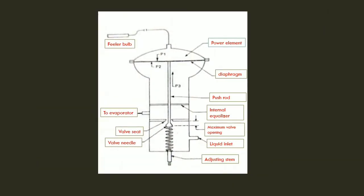This is the figure of the thermostatic expansion valve. We have two parts to keep in mind. The level of the valve is on its refrigerant outlet. The valve is on its seat, valve needle, power elements, diaphragm, push rod, internal equalizer, and maximum valve operating space. The liquid inlet. This is a liquid line supply and this is the adjustment system.